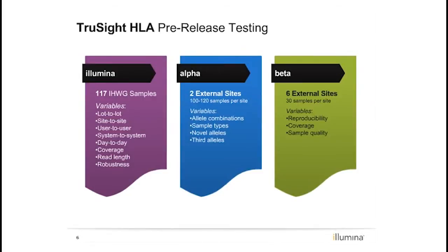We also wanted external feedback, so we brought in two alpha sites early on. These sites sequenced over 120 samples across at least six runs per site, selecting all their own samples from their library. All samples had reference typings from Sanger sequencing with either SSO or SSP confirmation. We looked at a broad range of allele combinations, ensuring coverage of at least all 184 known antigens. We also looked at different sample types: buccal samples, cord blood, peripheral blood, and cell lines.